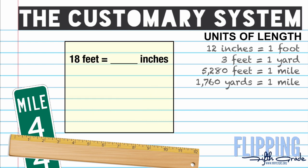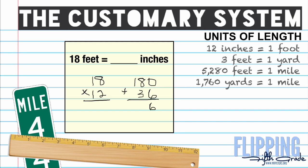Now we have the problem: 18 feet equals how many inches. We look over to the right to see how many inches are in a foot — we have 12. Since feet are bigger than inches we want to multiply, so we're going to take 18 times 12. The easiest way is using the distributive property: 18 times 10 gives me 180, plus 18 times 2 which is 36, and adding those together gives the answer of 216.